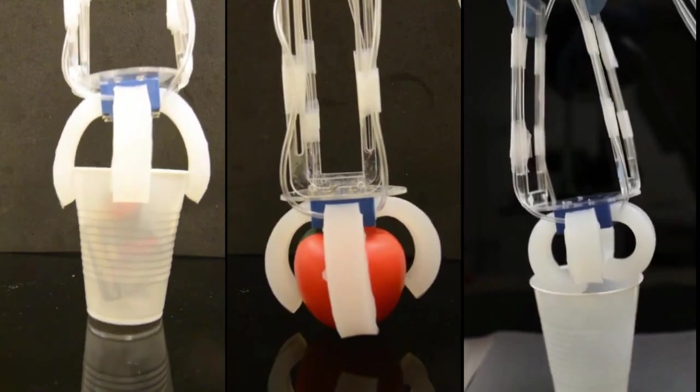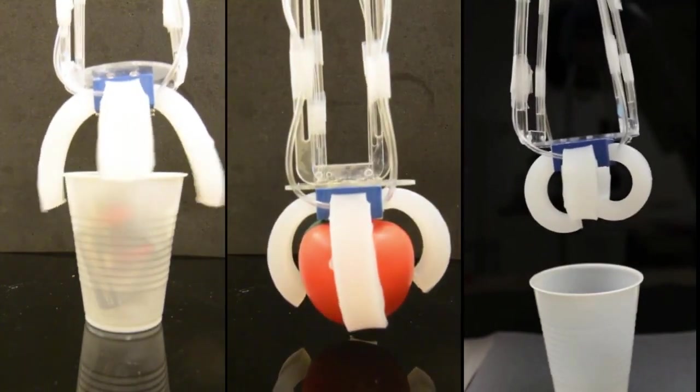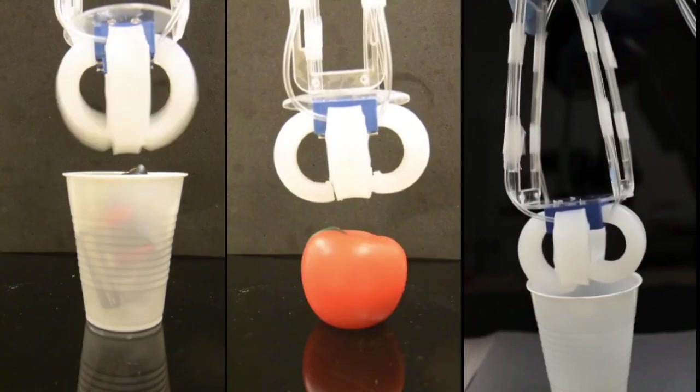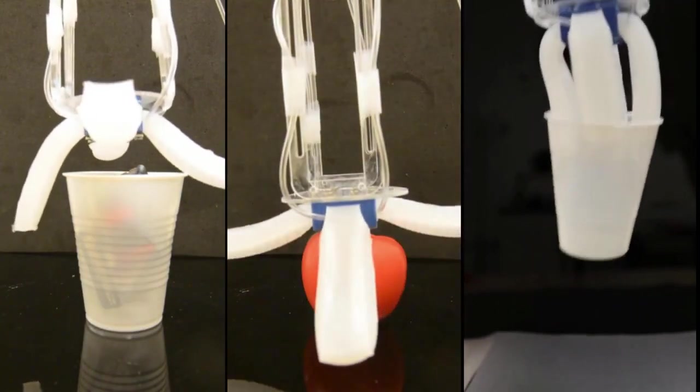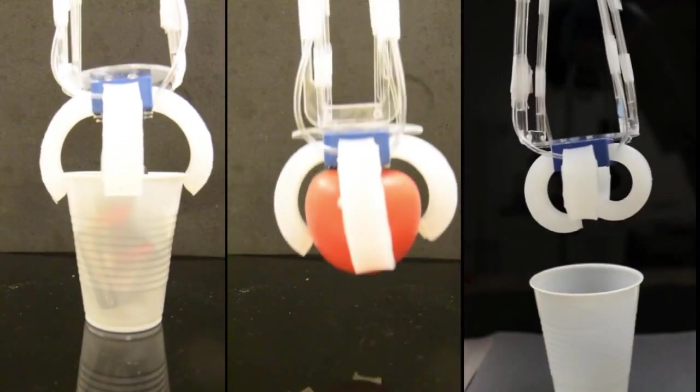But this research team used the pre-stressed layers to create grippers whose default position is clenched shut. Energy is required to open the grippers, but once they are in position, the grippers return to their resting mode, holding their cargo tight.